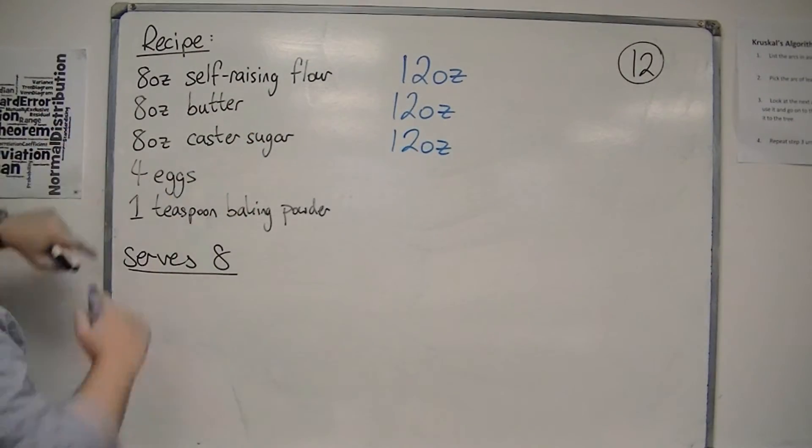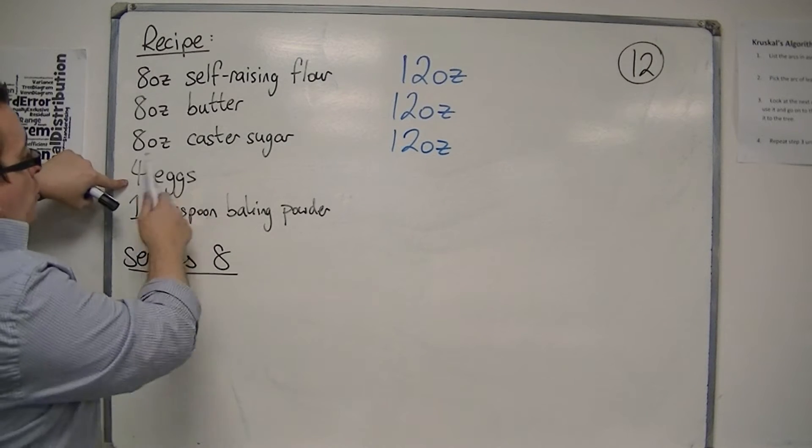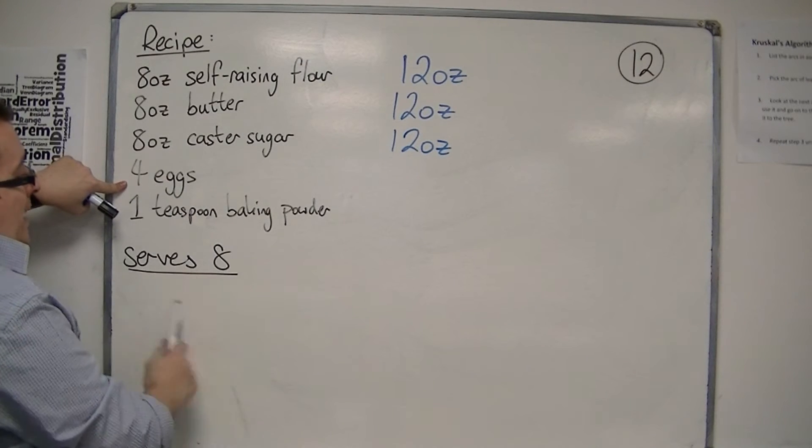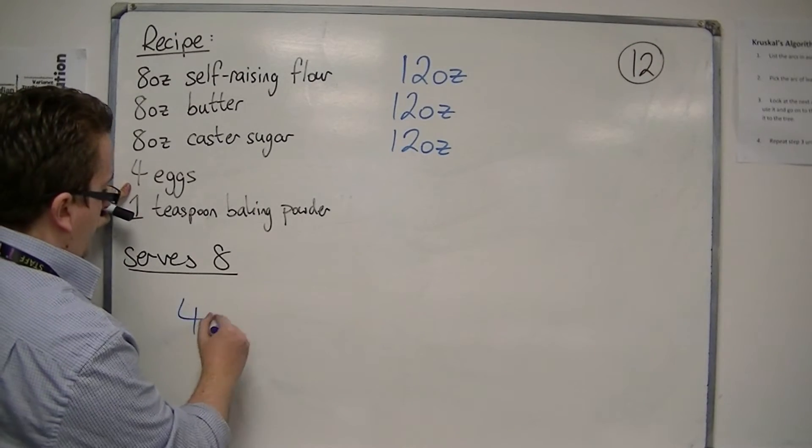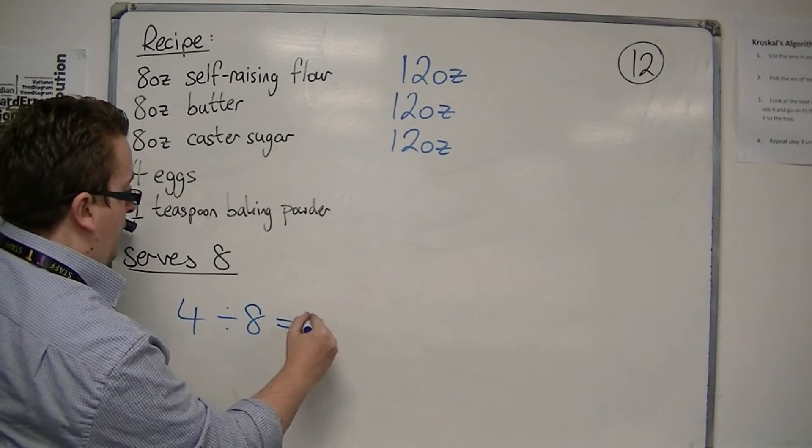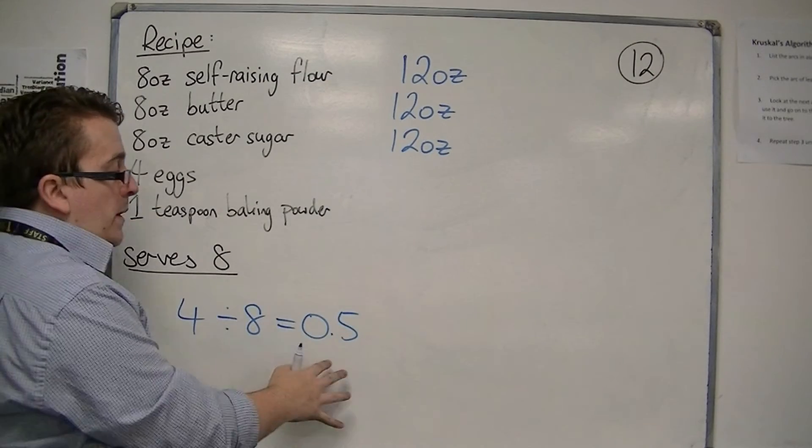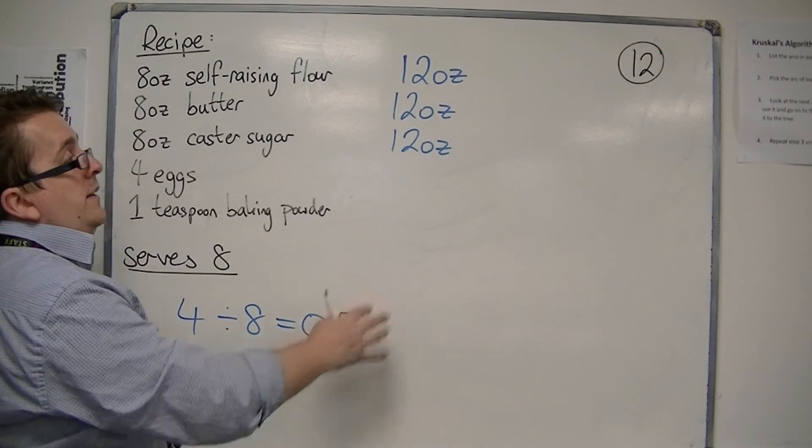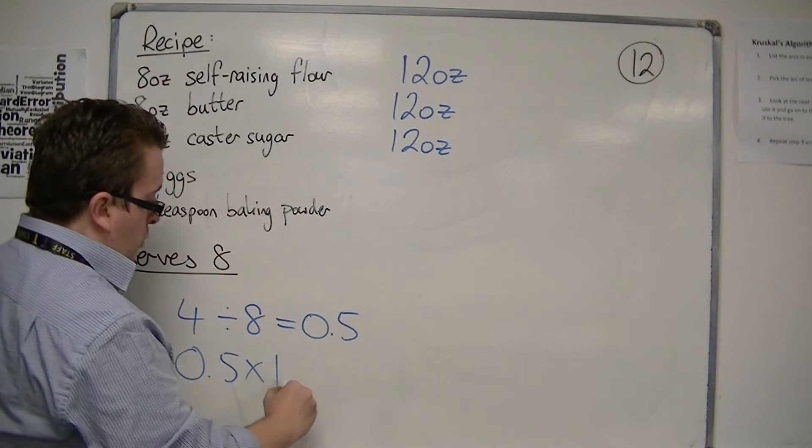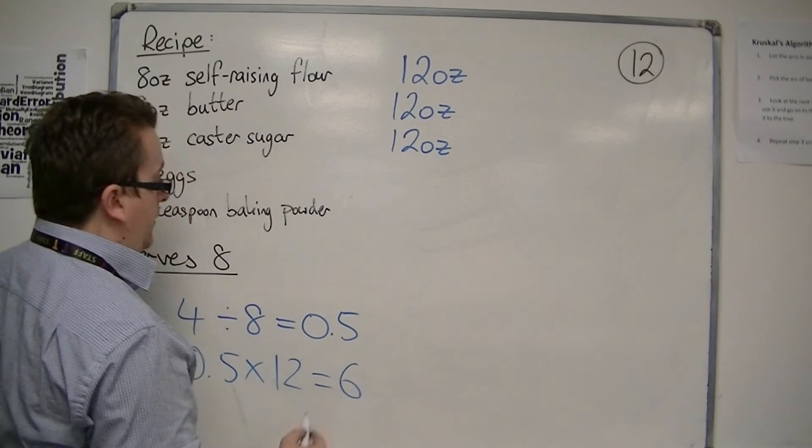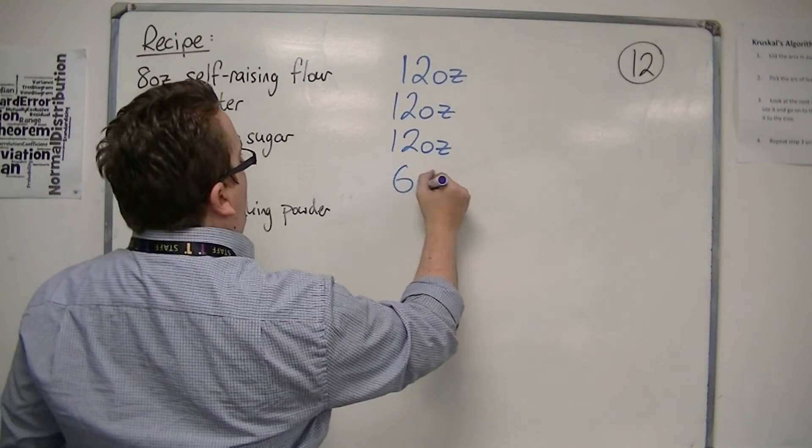Now eggs: 4 eggs are needed for 8 people, so each person requires half an egg. If each person requires half an egg, then 12 people will require 6 eggs.